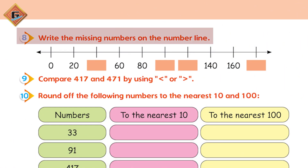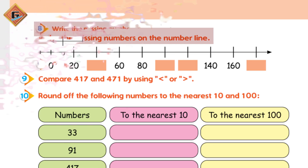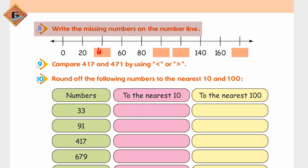Next hamare paas jo question hai wo yeh wala hai: write the missing numbers on the number line. 0, 20 ka gap aa raha hai - 40, 60, 80, 100, 120, 140, 160, and 180.